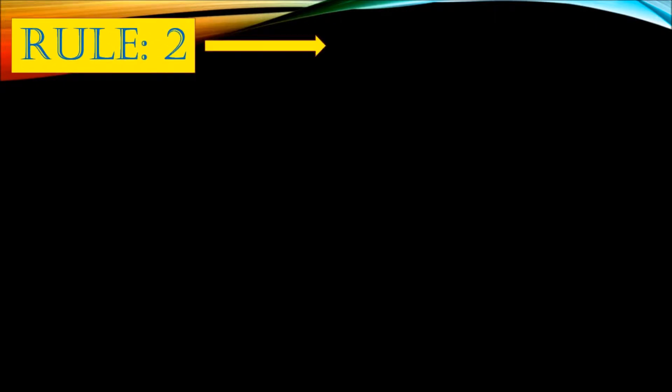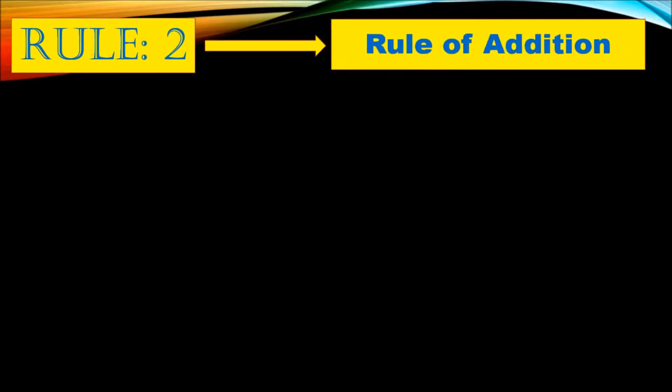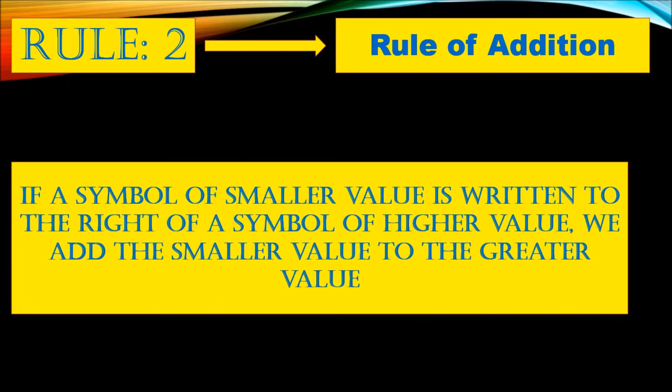Let's see rule two, that is the rule of addition. If a symbol of smaller value is written to the right of a symbol of higher value, we add the smaller value to the greater value. Let's see some examples.